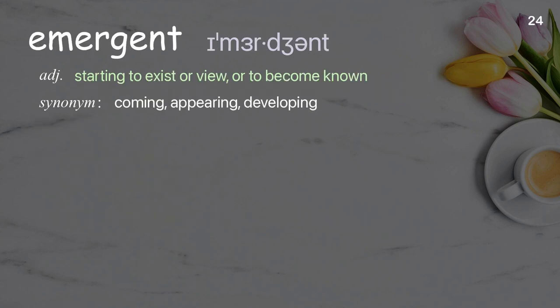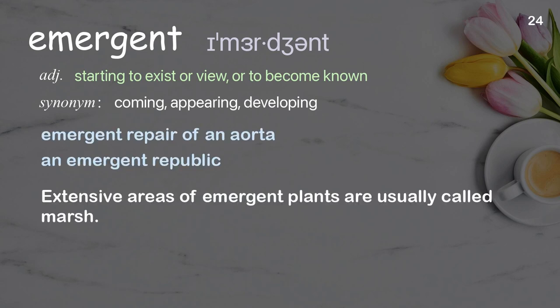Emergent: starting to exist or to become known. Examples: emergent repair of an aorta, an emergent republic. Extensive areas of emergent plants are usually called marsh.